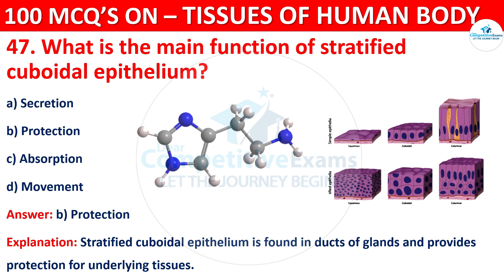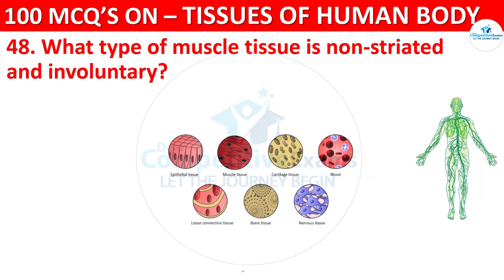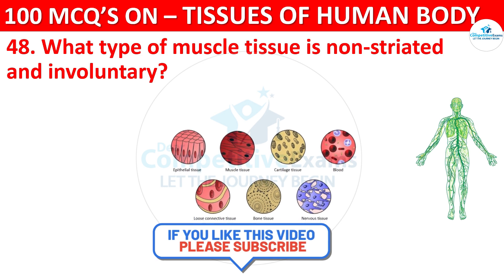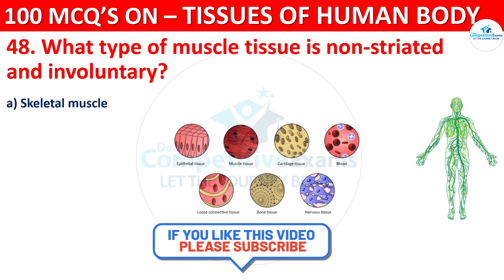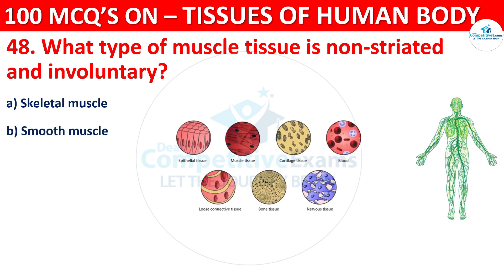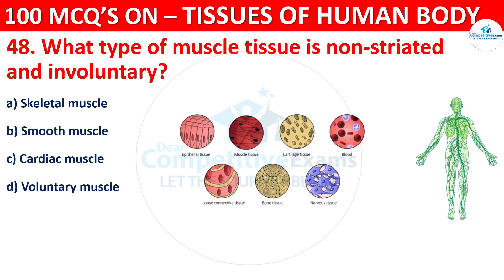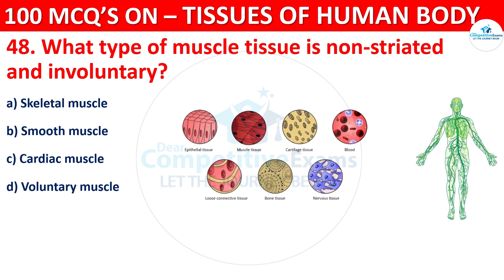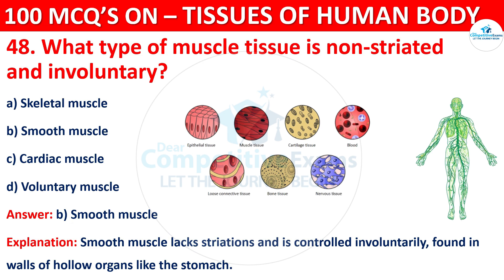Question number 48. What type of muscle tissue is non-striated and involuntary? Options are Skeletal Muscle, Smooth Muscle, Cardiac Muscle, or Voluntary Muscle. The correct answer is B, that is Smooth Muscle. Smooth muscle lacks striations and is controlled involuntarily, found in walls of hollow organs like the stomach.